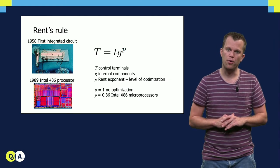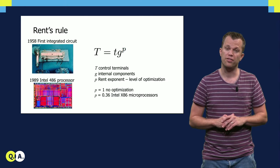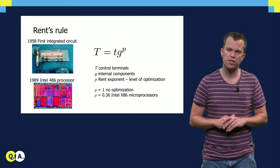This huge ratio between components and connectors is described by Rent's rule, and this rule has been one of the main drivers behind Moore's law.